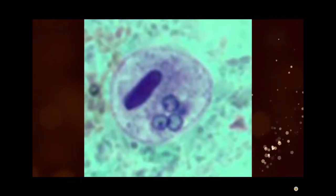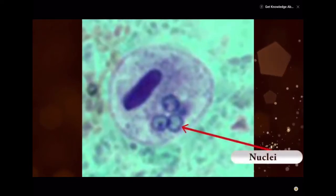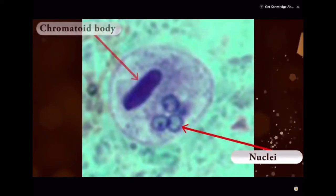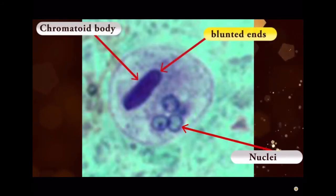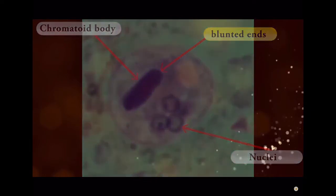Entomoeba histolytica cysts are round in shape and have up to 4 nuclei that characteristically have centrally located chromatoid body with typically blunted ends and uniformly distributed peripheral chromatin.